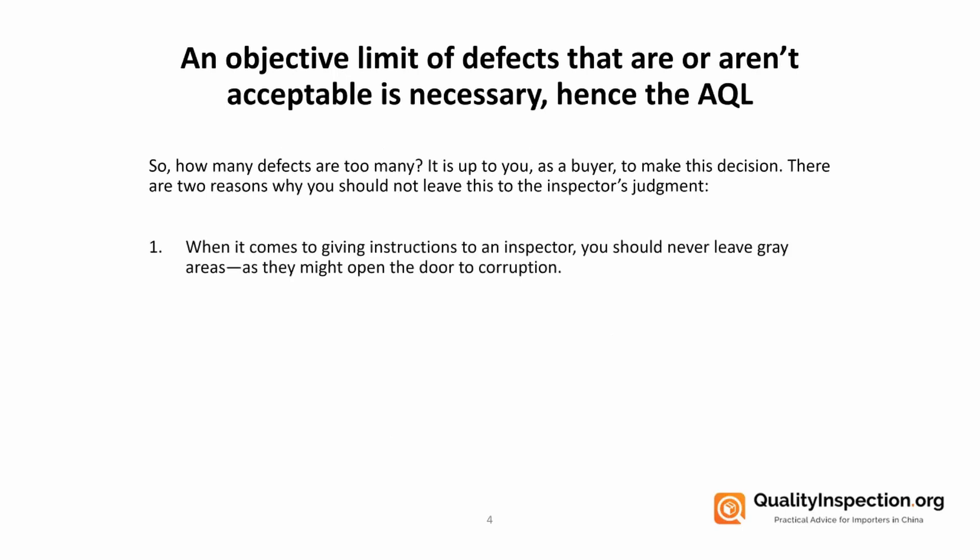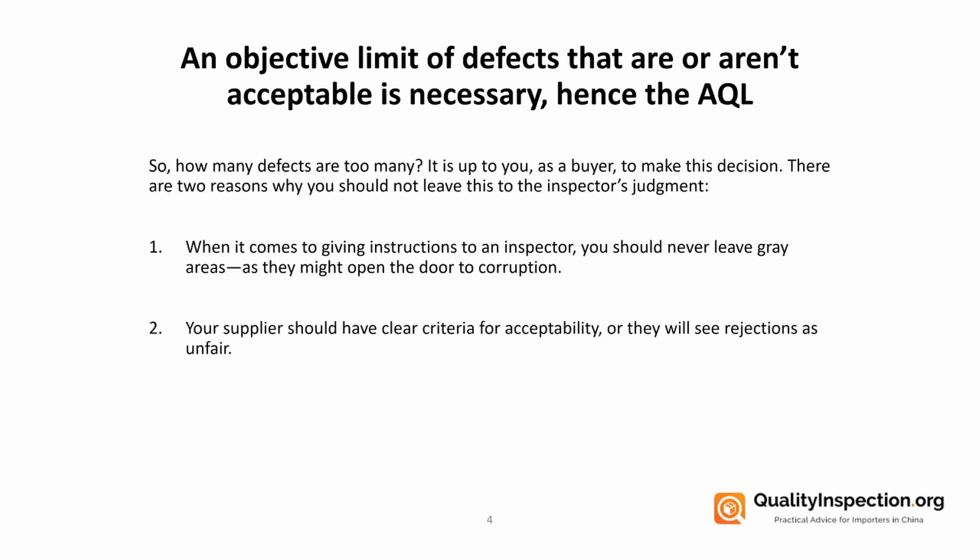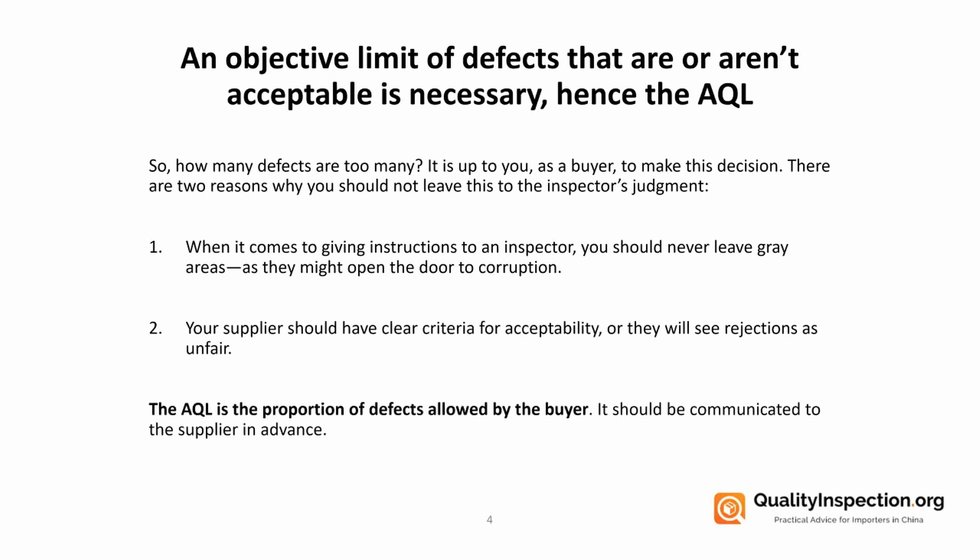Firstly, any instructions given to an inspector shouldn't include grey areas because this opens the door to corruption — for example, some suppliers might try to bribe quality inspectors to look the other way when certain defects are found that you haven't specified already. Secondly, your supplier needs to be accountable, and one of the ways to do this is to make sure they have very clear criteria on what is acceptable in terms of defects — the AQL — otherwise they may argue that any rejected products are unfairly rejected. Simply put, the AQL is the proportion of defects allowed by you, and you need to communicate this to the supplier in advance so they know what's expected of them in terms of quality.